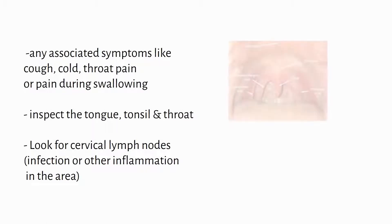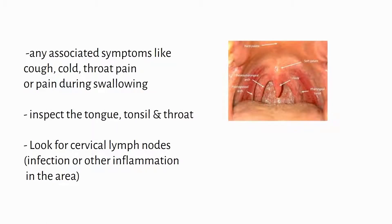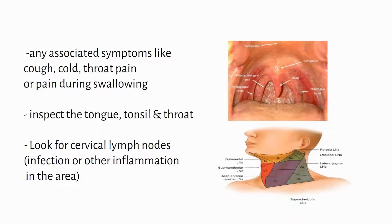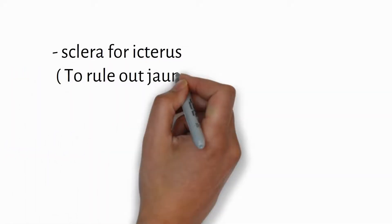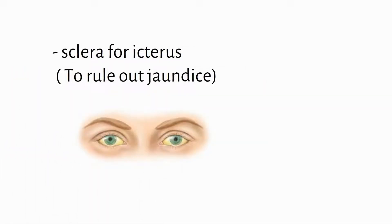After that you have to start physical examination. Ask the patient about any associated symptoms like cough, cold, throat pain, or pain during swallowing. Use a good torch and inspect the tongue, tonsil, and throat thoroughly. Look for cervical lymph nodes for any oral infection. Then check sclera for icterus to rule out jaundice.